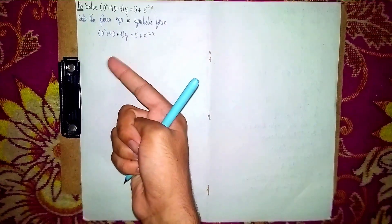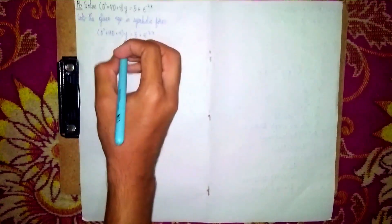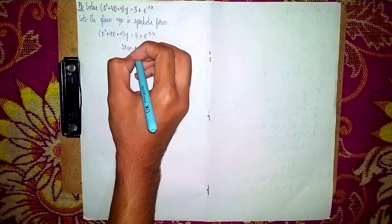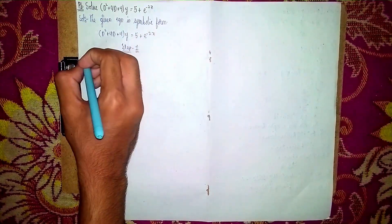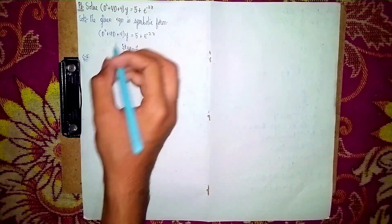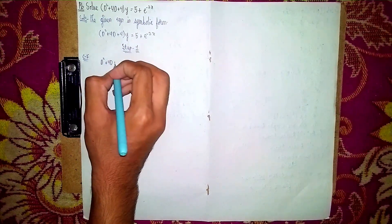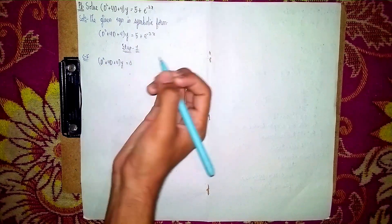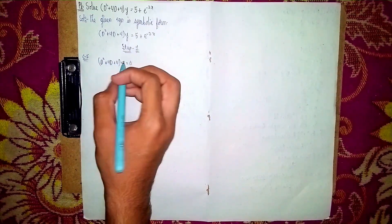The first step is to find the complementary function. The second step is to find the particular integral. The third step is the general solution. So, Step 1: to find the complementary function. For CF, I am taking the LHS first: (D² + 4D + 4)y = 0, considering the RHS equal to zero.